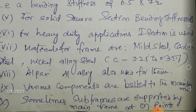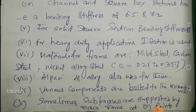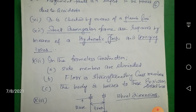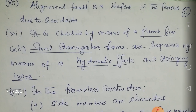Various components are bolted to the main frame. In addition to the main frame, sub-frames also exist in automobiles. The main frame supports the sub-frames at three points — this is an important piece of information.